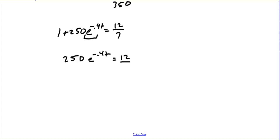We have 12 over 7 minus 1. Let's simplify that. We have to get a common denominator there. So we have 12 sevenths minus 7 sevenths, factor that out, we have 5 sevenths. We have 5 over 7, and that's going to equal 250 e to the negative 0.4t.